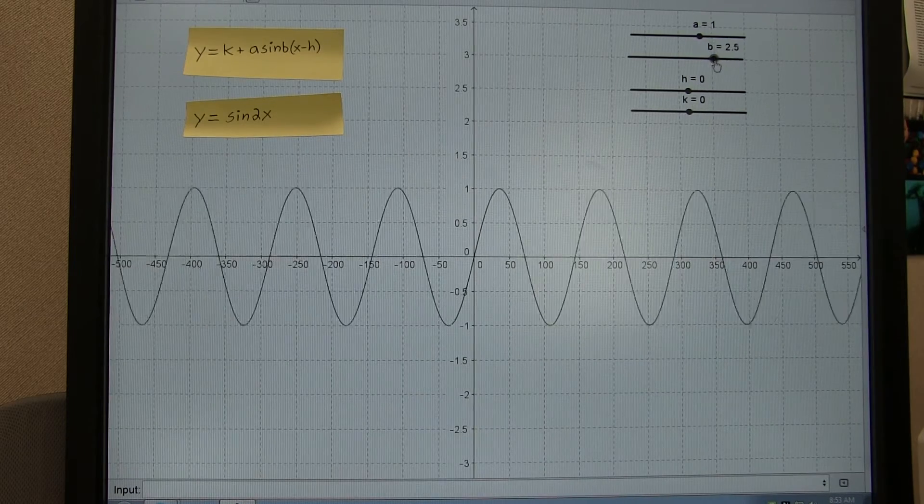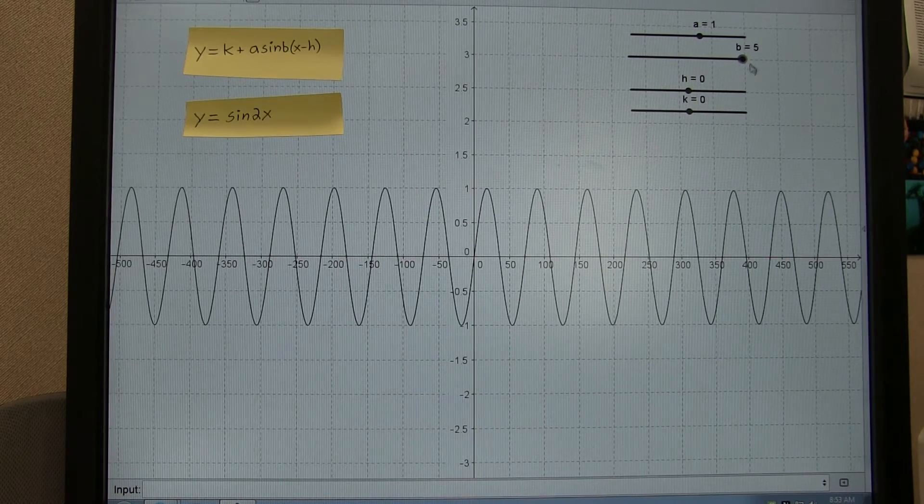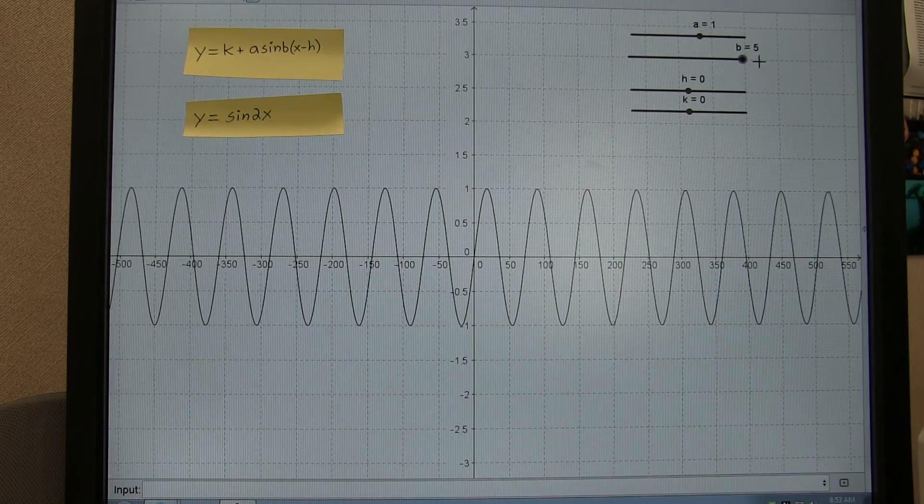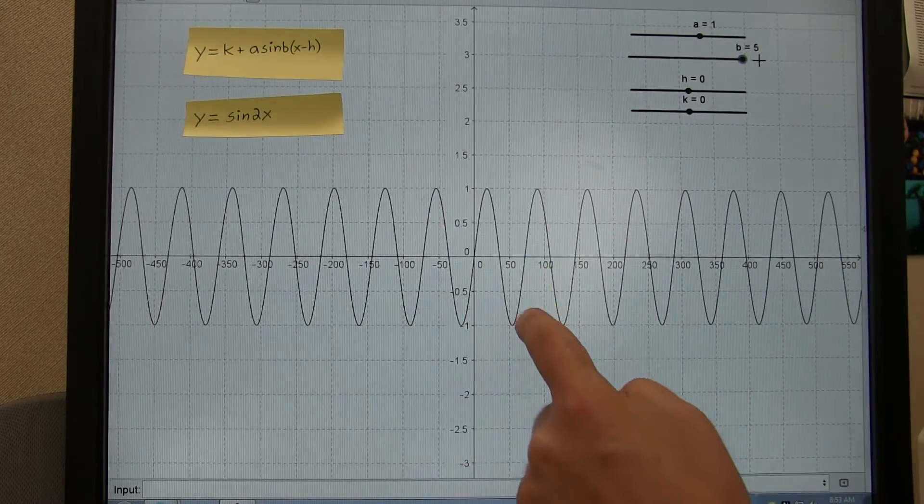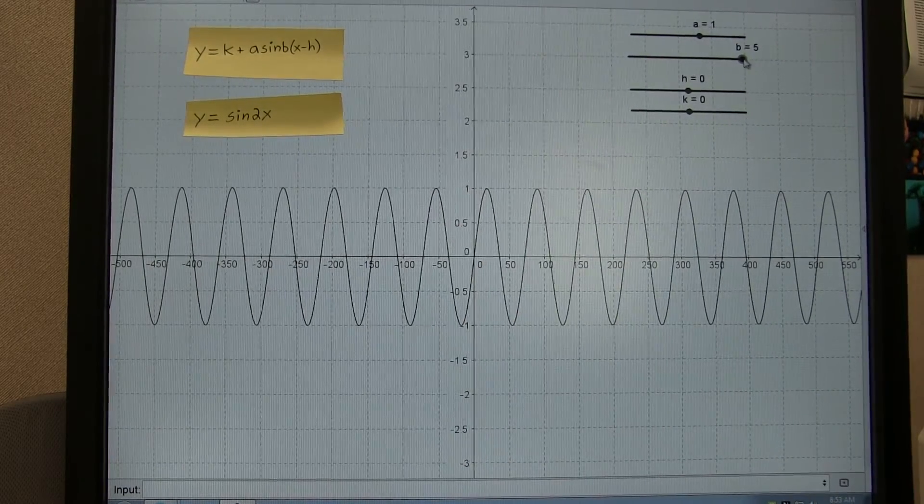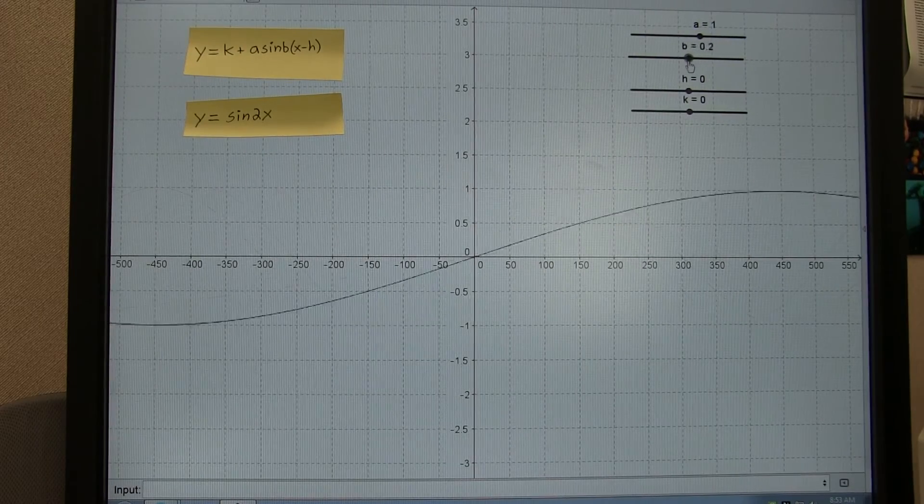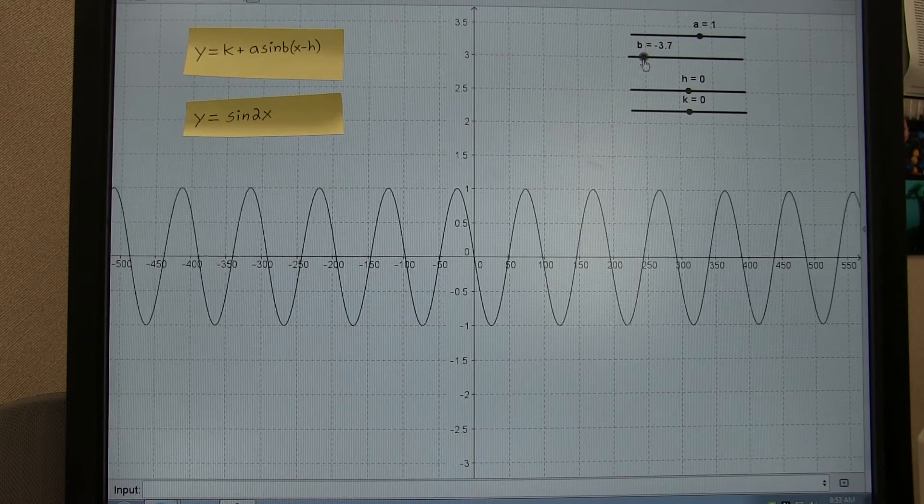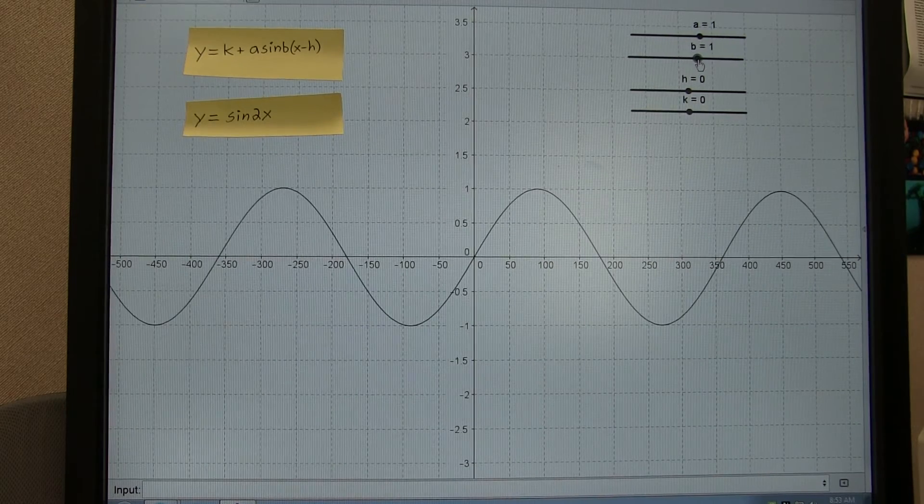Here's a more extreme value of B. With B is 5, we'd have 360 divided by 5 and the period would be much smaller. Changing it down to the negative values causes the graph to flip and also affects the period.